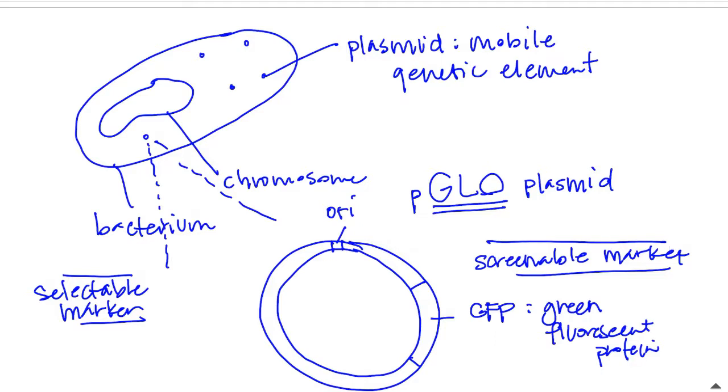Now, the other thing that is on the P-glo plasmid is a control switch that turns on and off the GFP gene. This was originally the arabinose operon. It's called PBAD, and it's the promoter plus the operator. So the promoter, remember, that's where RNA polymerase binds, plus the operator. And in this case, it's the promoter and the operator from the arabinose operon.